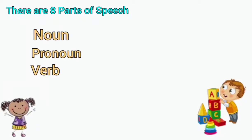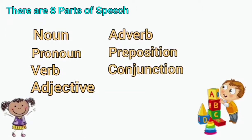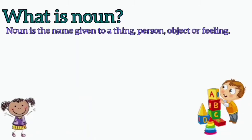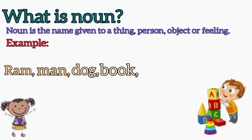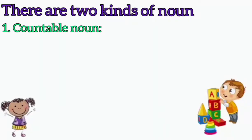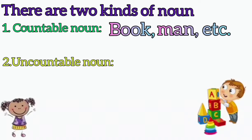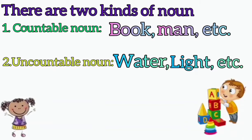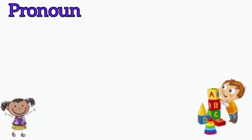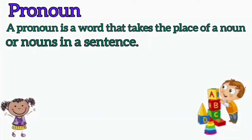There are eight parts of speech and they are: noun, pronoun, verb, adjective, adverb, preposition, conjunction, and interjection. What is a noun? A noun is the name given to a thing, person, object, or feeling. For example: man, dog, book, tree, etc. There are two kinds of noun: countable nouns like book, man, etc., and uncountable nouns like water, light, etc.